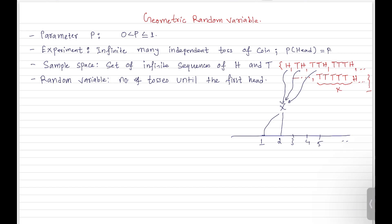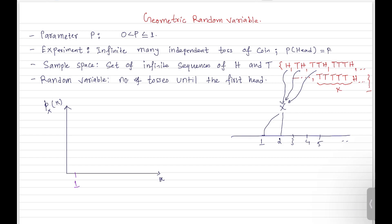Now to find the PMF of this random variable, we need to find the probability of each value that the random variable can take. Let me draw the PMF diagram — the probability distribution of this random variable X. Maybe we do the experiment and on the very first toss we get the head. The probability of getting head is P. So the random variable takes value 1 with probability P.